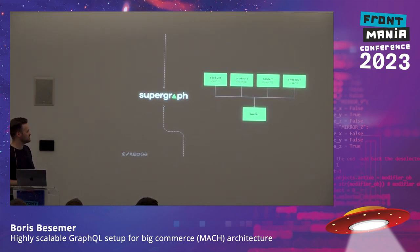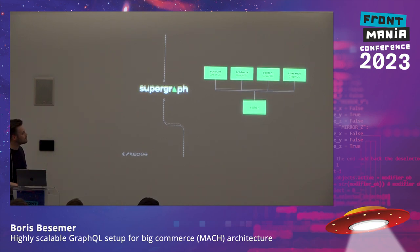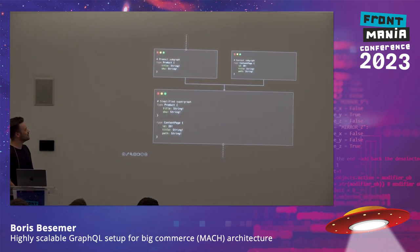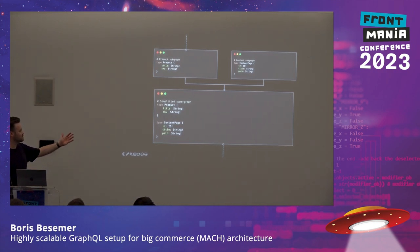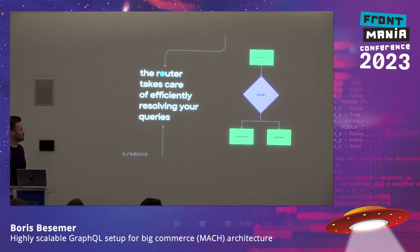Then you have the supergraph, which ties it all together. The supergraph is the router that takes each of these graphs and merges them together, and the router knows what services to go to. If you take a simple example — a product subgraph with a title and SKU, and a content page type with ID, title, and path — each of these gets merged into one supergraph by concatenating them together. Then the router takes care of efficiently resolving your queries. If your frontend queries both at the same time, the router knows to query them in parallel. If you just need one, it'll only query products or content.